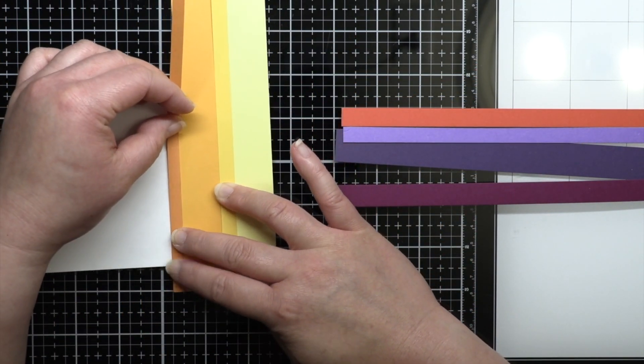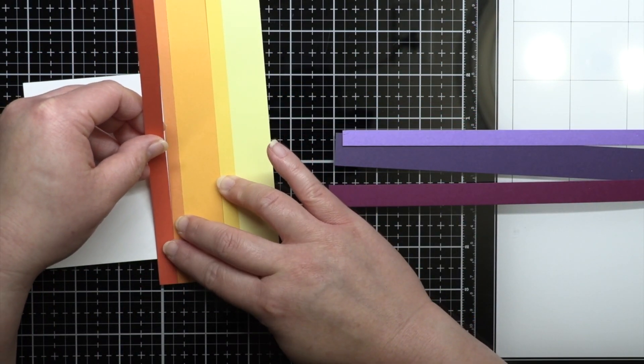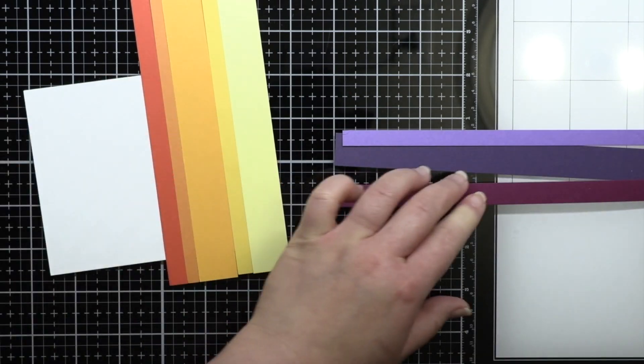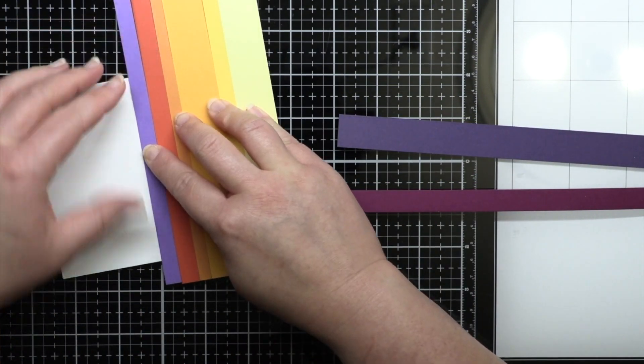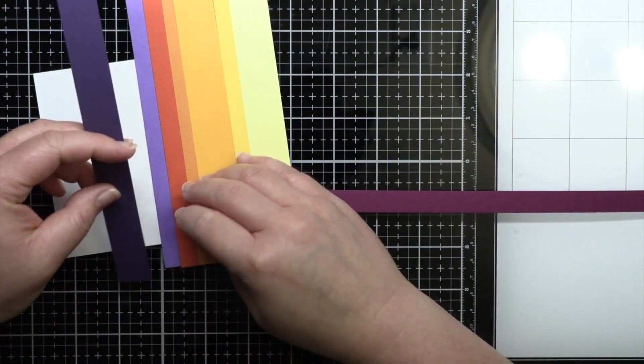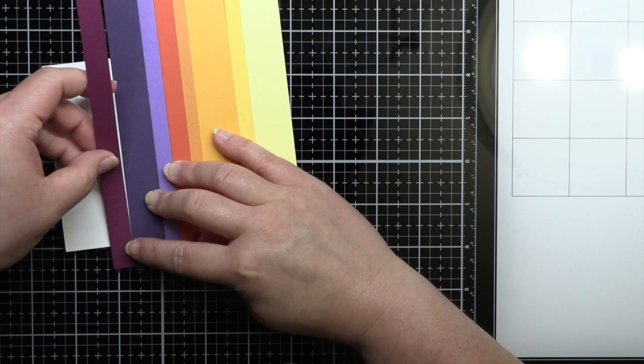I add adhesive to the card base and then add each strip of cardstock to the panel, making sure they're lined up exactly. Then I trim off the excess that's overhanging on the sides. You can find another set of cards I made recently using cardstock scraps by clicking the link above. And don't forget to subscribe so you don't miss any of my future videos.